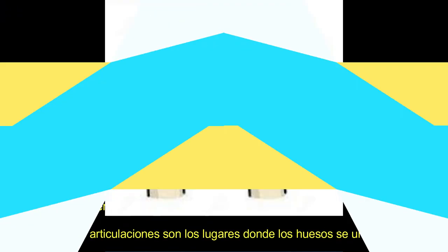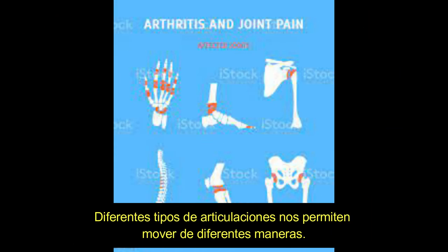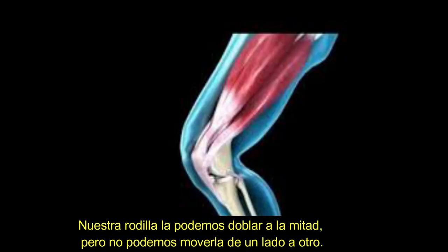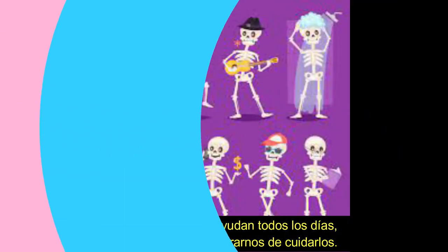Joints are the places where bones come together. Different types of joints allow us to move in different ways. For example, our knee can be folded in half but we cannot move it back and forth. This joint works like a hinge, like the one that allows us to open and close a door.